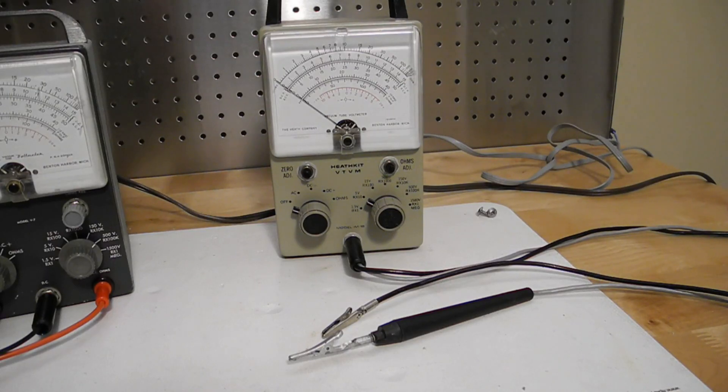Later models, like this IM18, integrated this into one single test lead which had a switch for AC ohms or DC. This avoided the need for two types of leads, but you had to remember to switch it properly or you would get incorrect measurements.